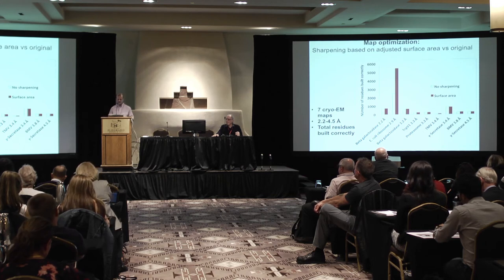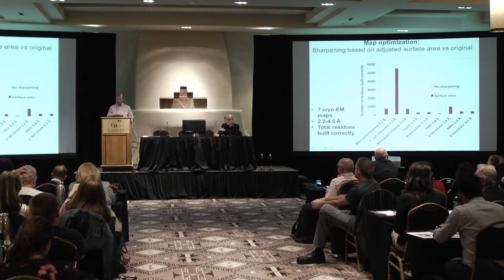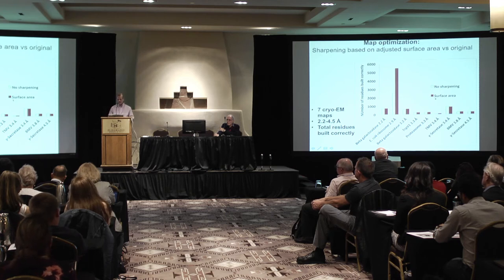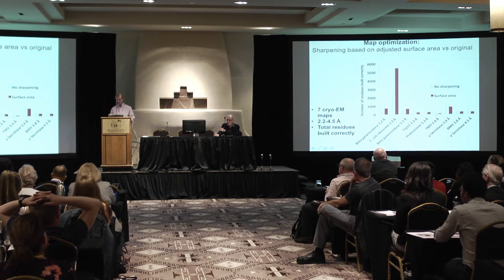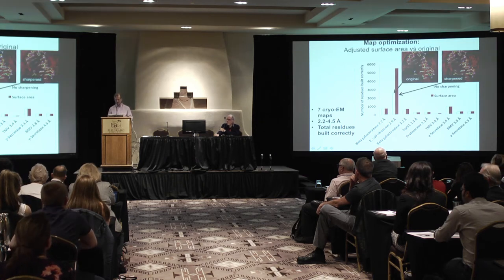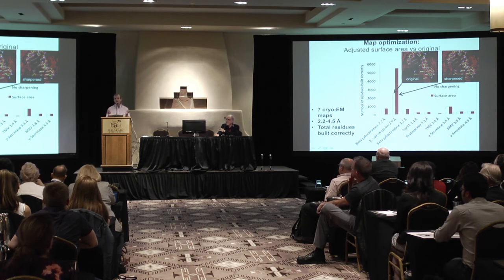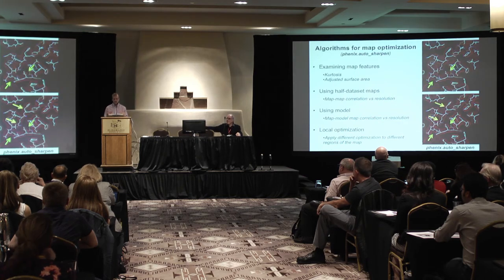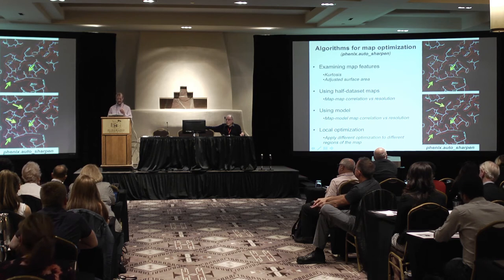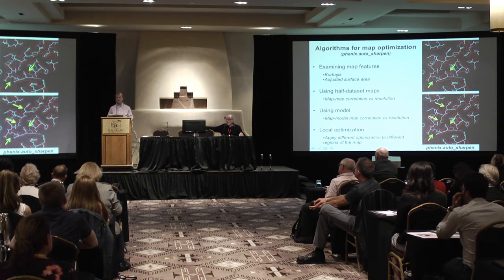Here's an example. We take a bunch of different structures and rebuild them automatically using either the original unsharpened map deposited in EMDB or the sharpened map based on surface area. In most cases it doesn't make too much difference — the starting deposited maps are pretty good. But for the ribosome structure, it's way better after sharpening because the original deposited map was greatly blurred. We can also use kurtosis — the peakiness of a map — to optimize sharpening, and it also works pretty well. Additionally, we can use the half-map data sets and compare them as a function of resolution, or use a model to optimize the correlation between map and model.